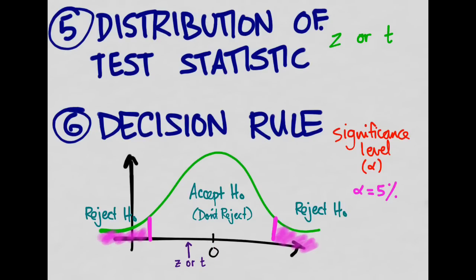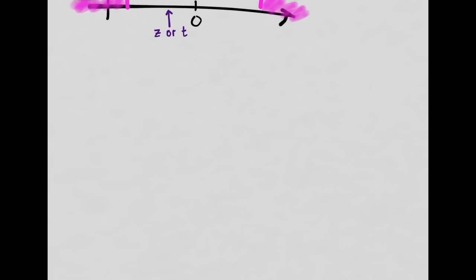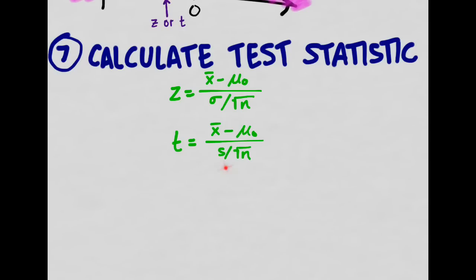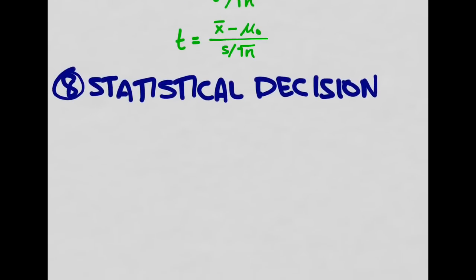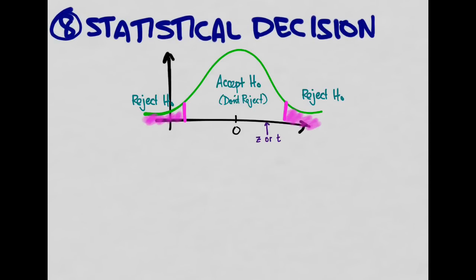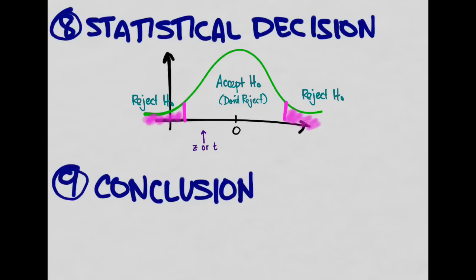The next step is to calculate the test statistic — we already know the formula. We have the data from our sample, our hypothesized value, and either calculate or know the standard deviation, plus we know the sample size. The next step is to make a statistical decision: once we calculate the test statistic, we see where it falls and then make a conclusion based on where that test statistic fell.